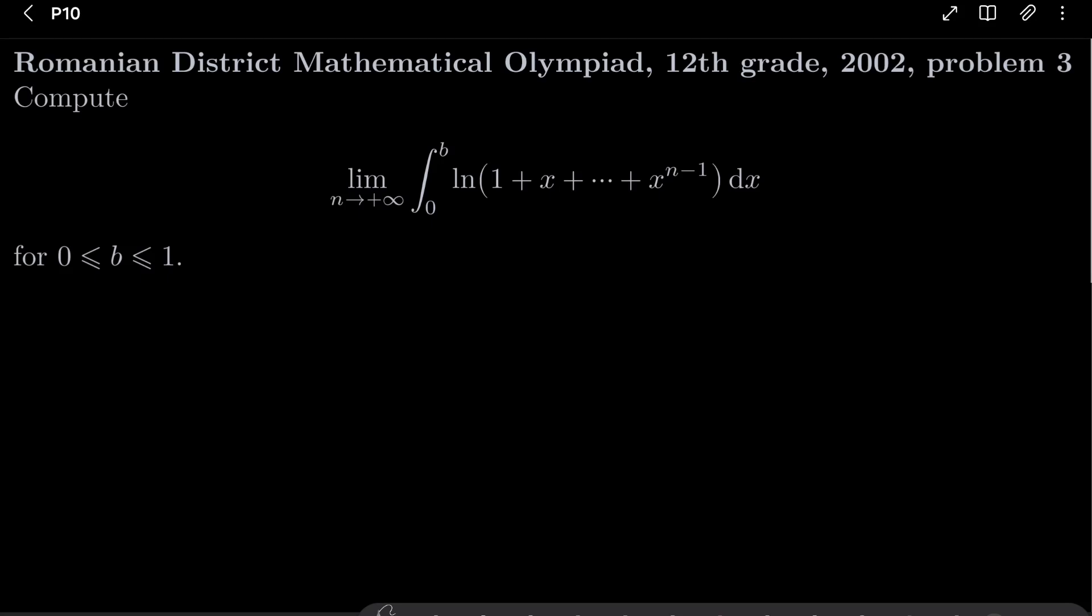We wish to compute the following limit: limit as n goes to infinity of the integral from 0 to b times natural log of 1 plus x plus x squared and so on plus x to the power n minus 1 dx, where b is a number between 0 and 1.